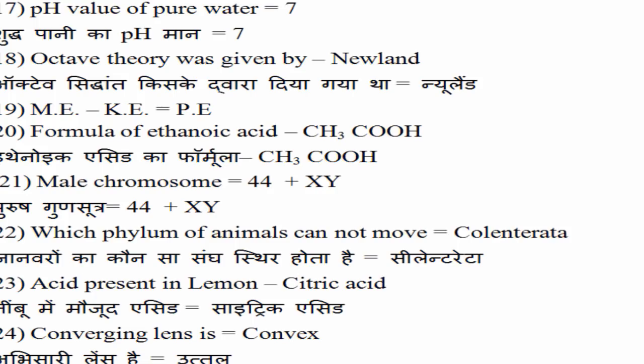अगला question: lemon — नीबू में कौन सा अम्ल मौजूद होता है. तो citric acid याद रखिए, citric acid नीबू में मौजूद होता है. 24वाँ question: अभी सारी लेंस कौन सा है — तो अभी सारी जो lens है वो है उत्तल, और अभी सारी जो mirror है वो है अवतल. अगर आपको mirror पूछा जाए तो अवतल लिखिएगा.